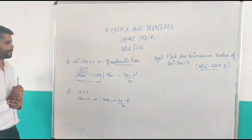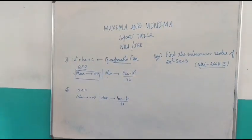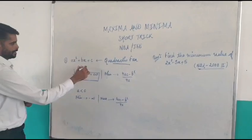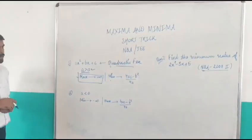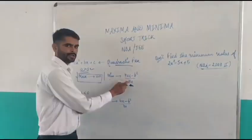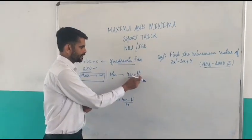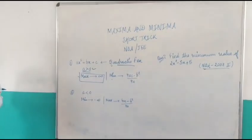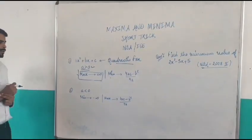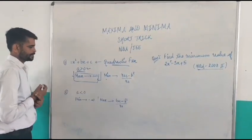and if here A is greater than 0, then we have minimum value. That is, 4AC minus B squared divided by 4A. And here maximum value is infinity. This means the maximum value does not exist.